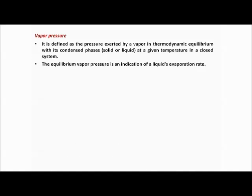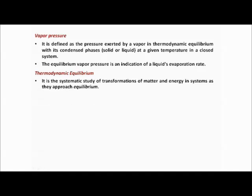The equilibrium vapor pressure is an indication of the liquid's evaporation rate. For a liquid, the equilibrium vapor pressure indicates how fast the liquid evaporates. For example, with simple water, the rate of evaporation of water is related to its vapor pressure at equilibrium.